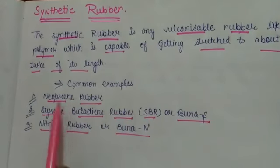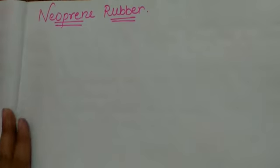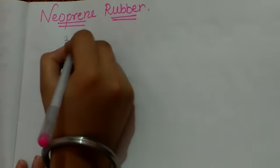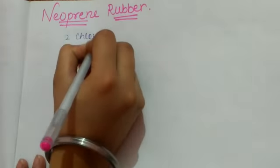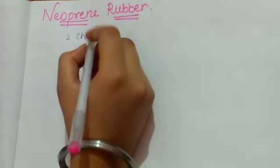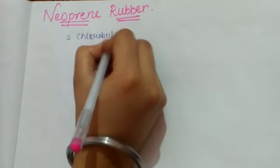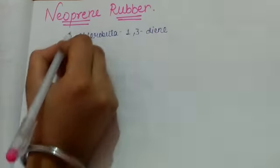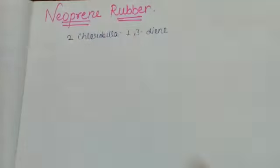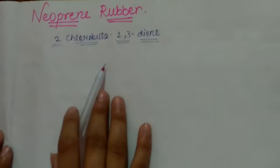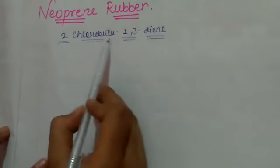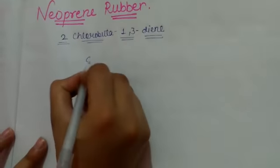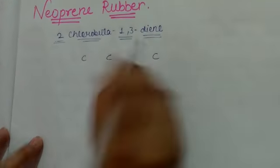Neoprene rubber. Now we have 2-chloro-buta-1,3-diene. We'll make neoprene rubber. Now we have 1, 2, 3, 4 carbon atoms. And 1,3-diene means double bond at 1 and double bond at 3, with single bond between.